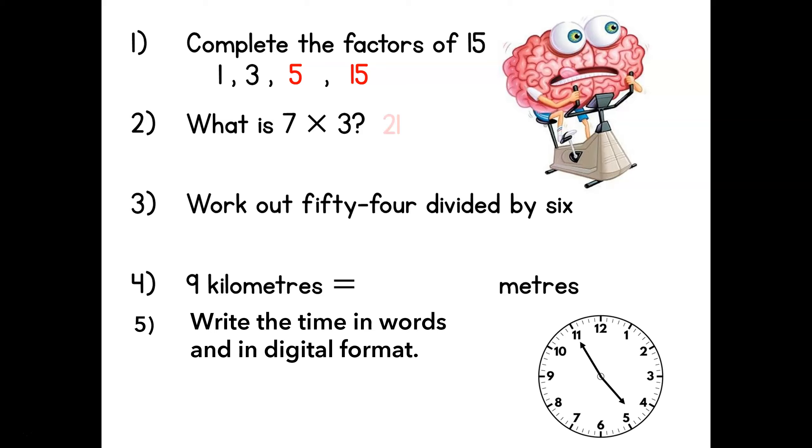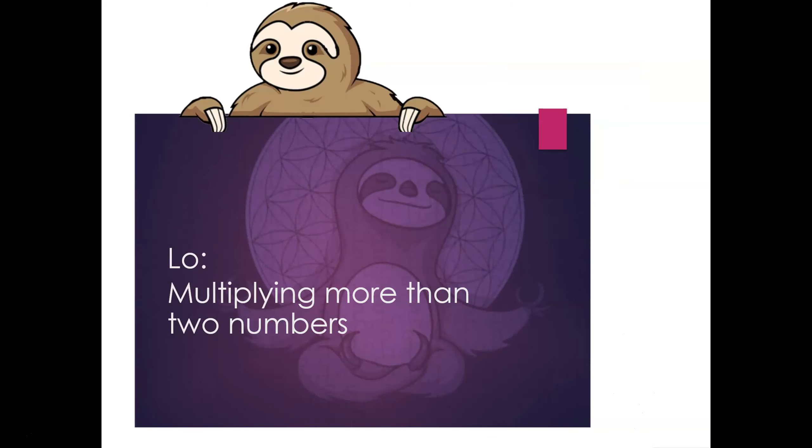Quick fire. Question two: 21. Question three: 9. Question four is checking that we can recall that there are 1000 meters in one kilometer. If you know that well, then there are 9000 meters in nine kilometers. Question five is our time question. The clock's minute hand is pointing to five showing that there are only five minutes until the next hour. This means it is five minutes to five, and we write that as a digital time 4:55. Remember, digital time is always left to right: the hour and the minutes past the hour. Now we are ready to focus on our learning objective for today: multiplying by more than two numbers. Let's give it a go.